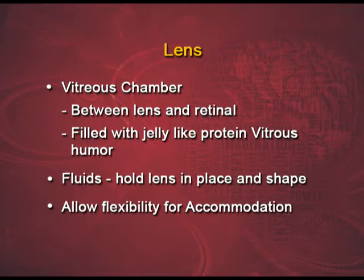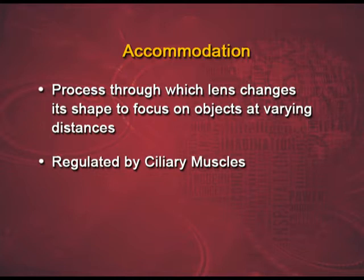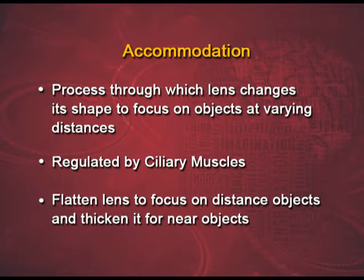What is accommodation? Accommodation is the process through which the lens changes its shape to focus on objects at varying distances. It is regulated by the ciliary muscles, which are attached to the eye lens. The muscles help the lens to flatten when it has to focus on distant objects and help it to thicken up when the focus has to be given to nearby objects.